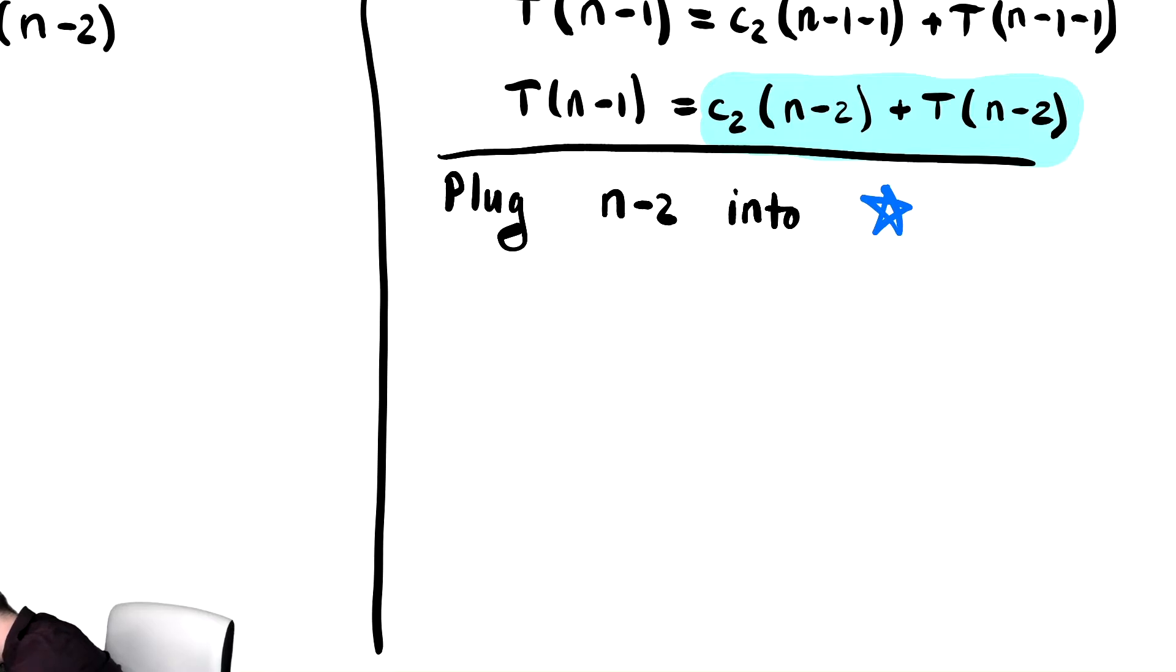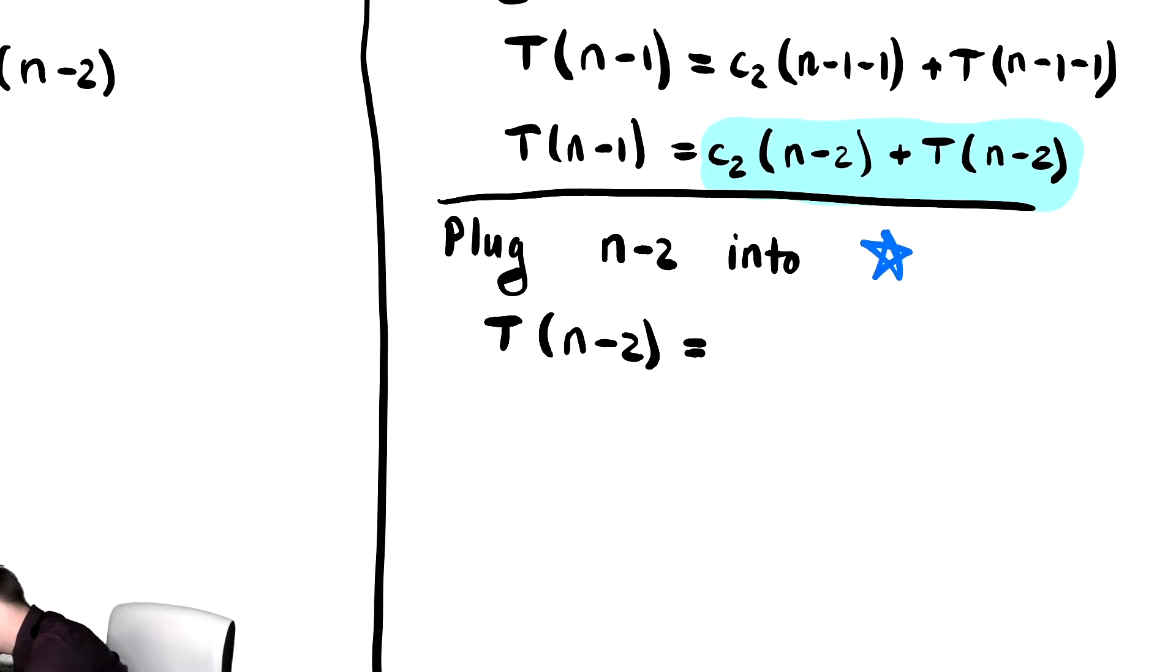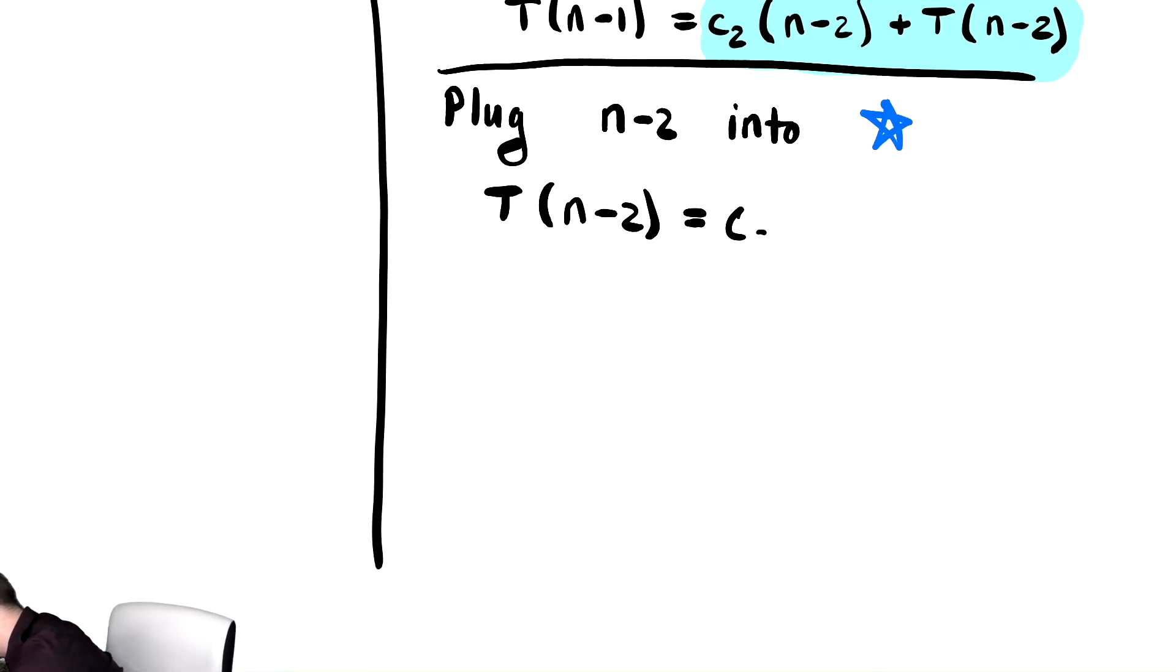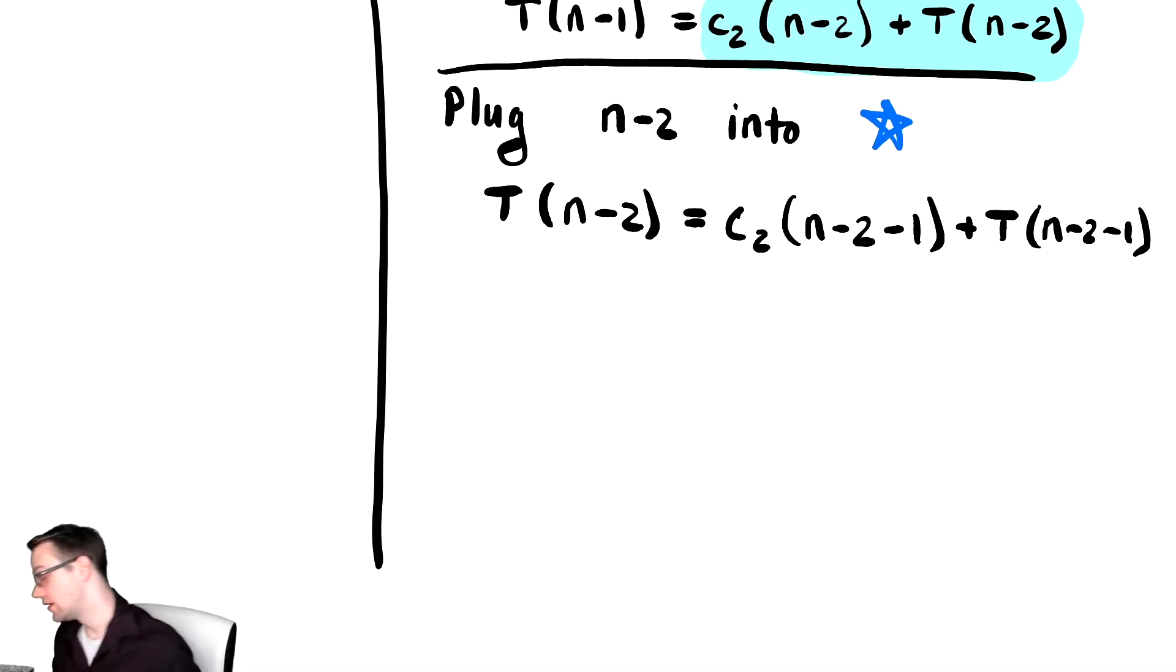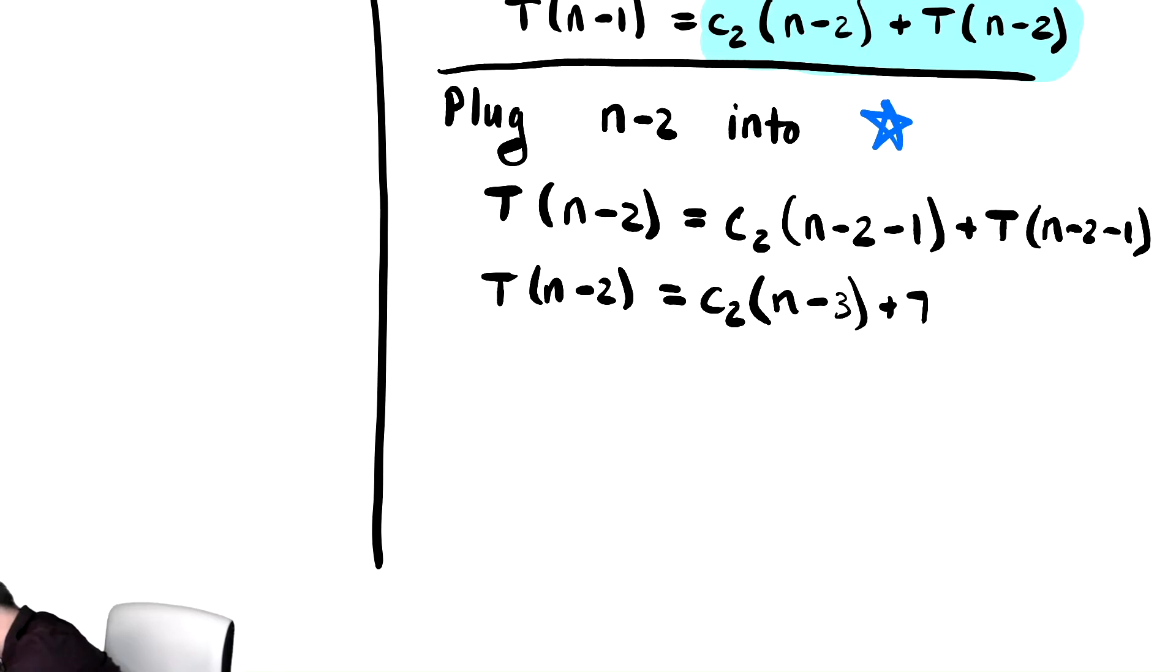If we do that, we get T of n minus 2 on the left is equal to C2 times n minus 2 minus 1 plus T of n minus 2 minus 1. We're going to collect together some like terms, and we get that T of n minus 2 is equal to C2 times n minus 3 plus T of n minus 3.